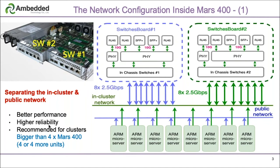Another option — option two — for network configuration inside Mars 400 is bonding mode. Bonding mode means having the two Ethernet ports bonded together for each microserver module, then connecting to the two in-chassis switch modules. With this option, the user could even lose one switch module without the entire cluster being impacted. This design is more flexible and allows fewer units. However, the compromise is that rewrite performance will be less optimal than the default separate mode.